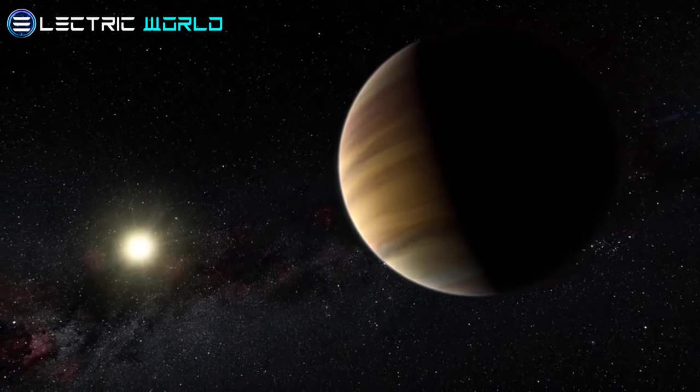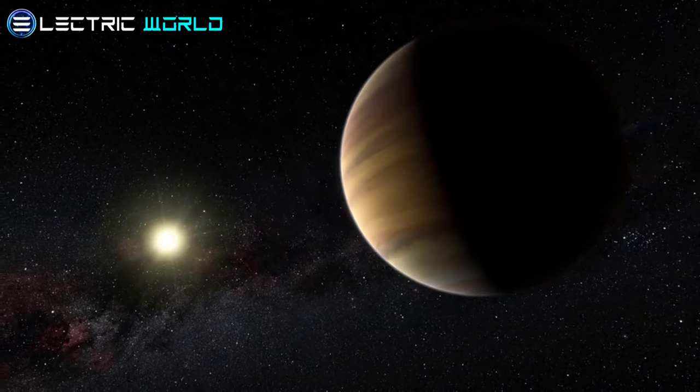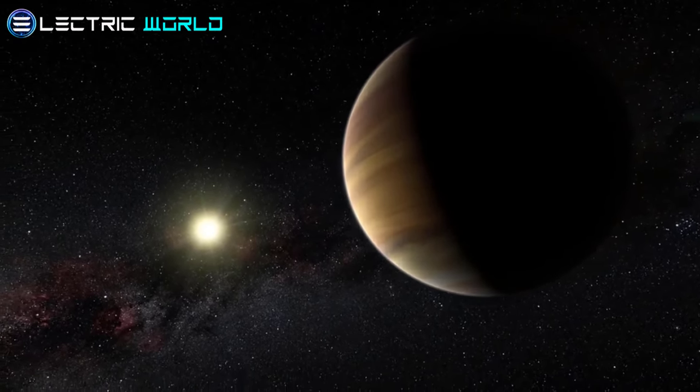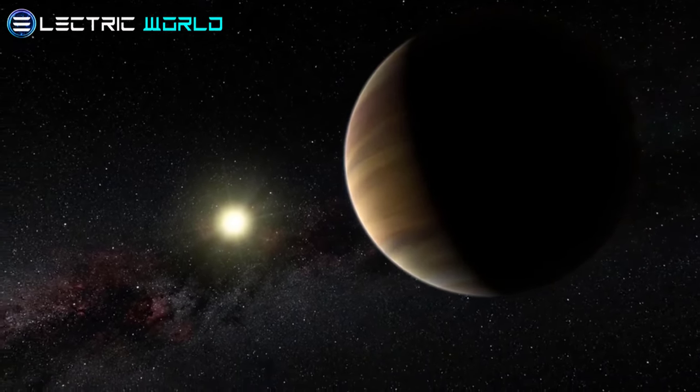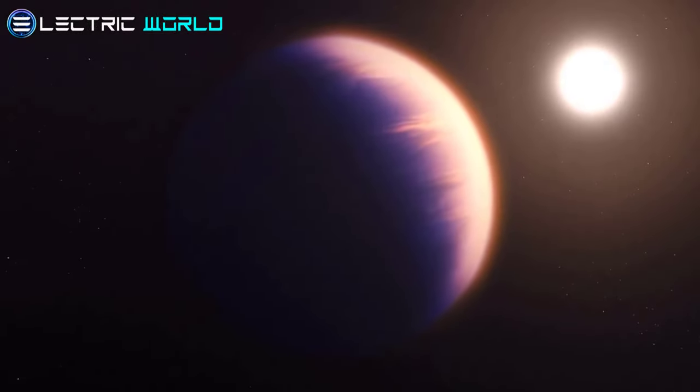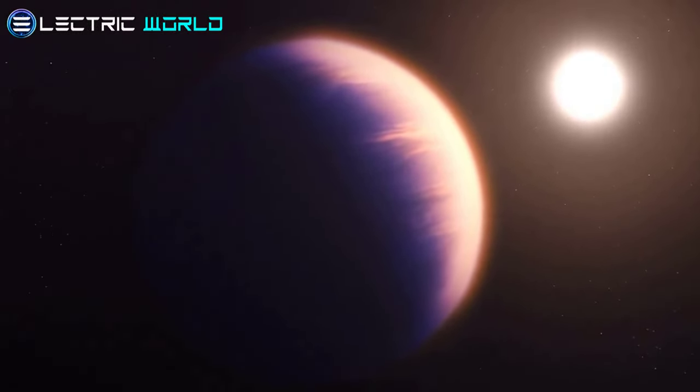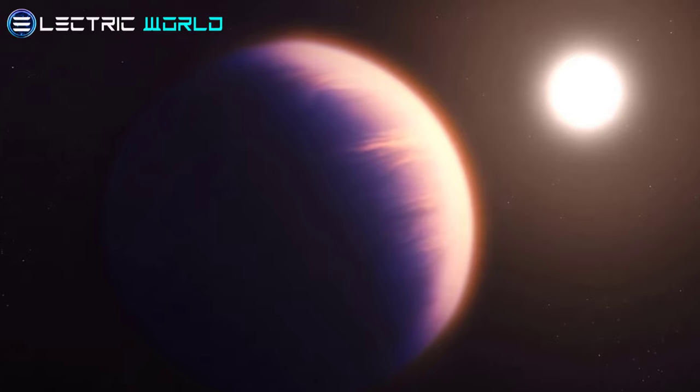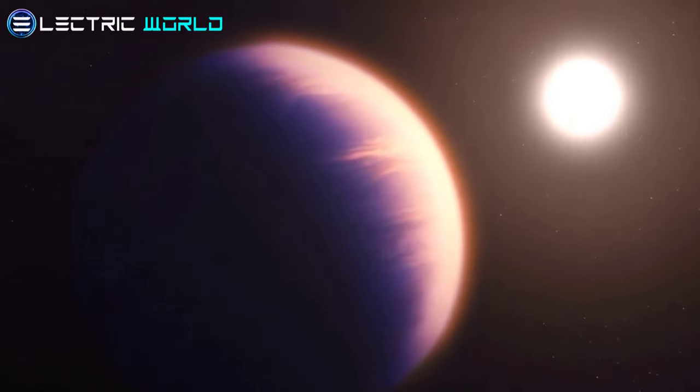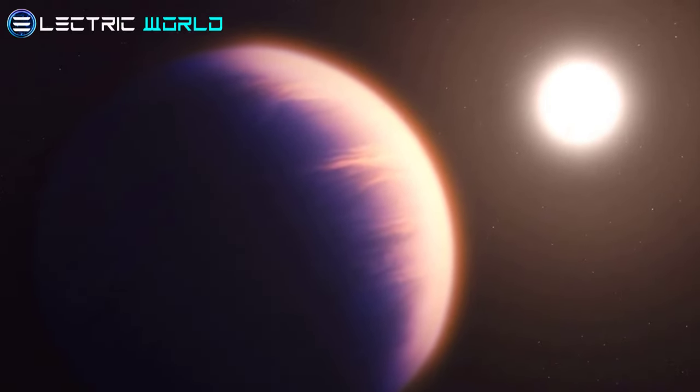WASP-39b isn't really a target to look for life. Not only is it a gas giant, but its proximity to its star allows it to boil at 900 degrees Celsius. However, the number of Earth-sized planets at colder distances is growing. This discovery, therefore, is a promising indication that the telescope will be able to do similar observations with their atmospheres, if they exist.